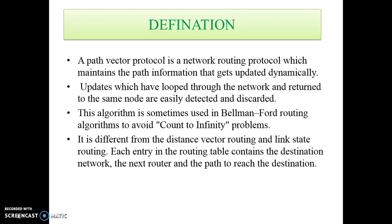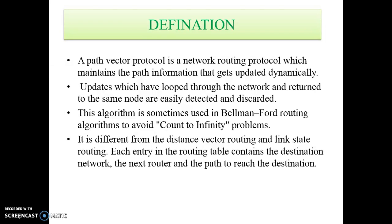A path vector protocol is a network routing protocol which maintains the path information that gets updated dynamically. Updates which have looped through the network and returned to the same nodes are easily detected and discarded. This algorithm is sometimes used in the Bellman-Ford routing algorithm to avoid count-to-infinity problems. It is different from distance vector routing and link state routing. Each entry in the routing table contains the destination network, the next router, and the path to reach the destination.